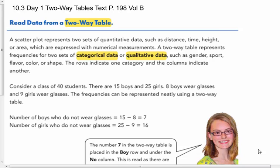Reading data from a two-way table. A scatter plot represents two sets of quantitative data, such as distance, time, height, or area, which are expressed with numerical measurements.